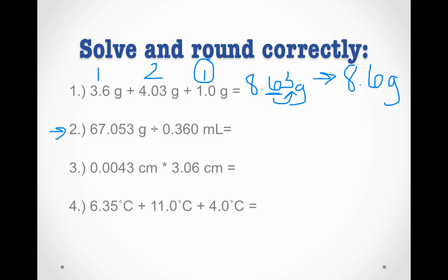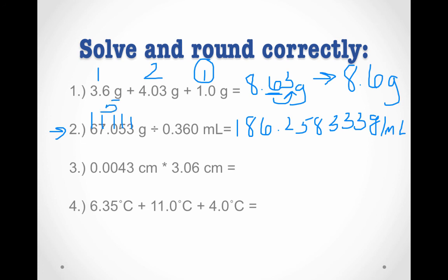Let's try number two. We want to report a calculated, unrounded answer. In this case, we get 136.258333 grams per milliliter. Since this is a division problem, we want to round to the same number of sig figs as our measurement with the fewest sig figs. So let's count sig figs: here we have 1, 2, 3, 4, 5 — that zero is between two non-zero numbers, making it significant. Here we have 1, 2, 3 — zeros at the end of the number to the right of the decimal are significant; zeros at the front of the decimal without a number in front of them are not significant. So we want to round to three sig figs. Count to the third sig fig, look to the right — we round down because it's less than five. So we get 136 grams per milliliter.